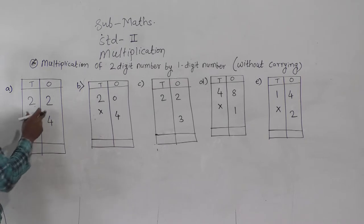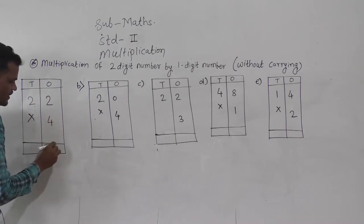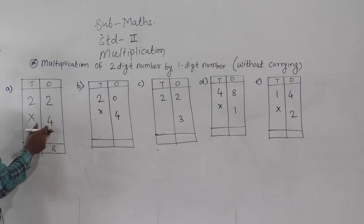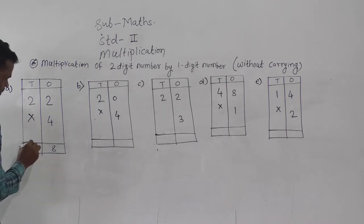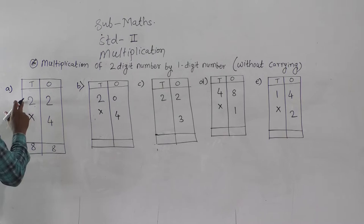First you have to start from the ones place digit. 2 multiply by 4. So first recite the table of 4 up to 2: 4 ones are 4, 4 twos are 8, and write here in the ones column. Then next, multiply this tens place digit by 4. So 4 twos are 8. Here, 88 is the product of 22 and 4.